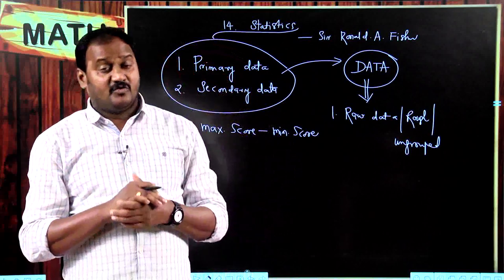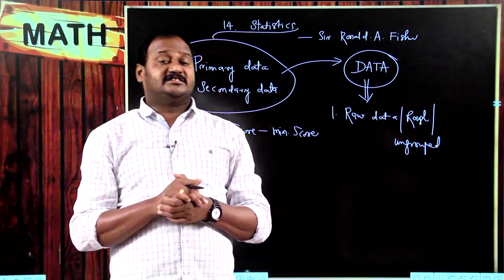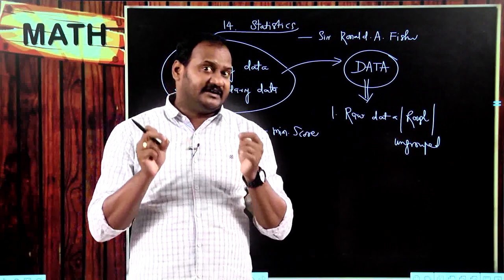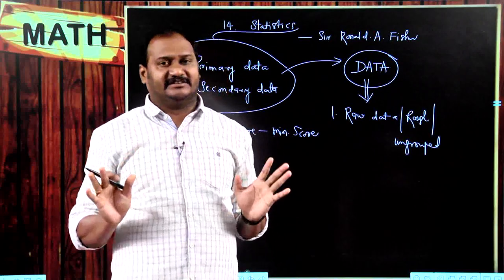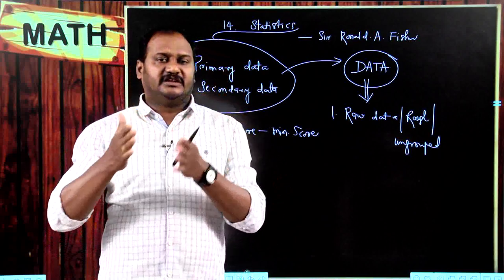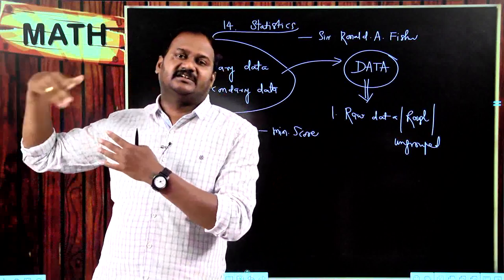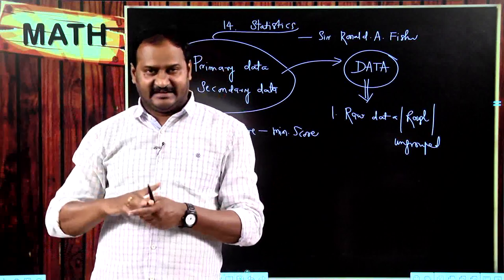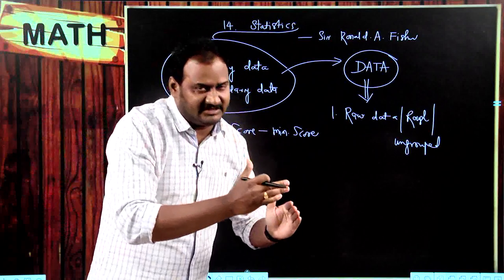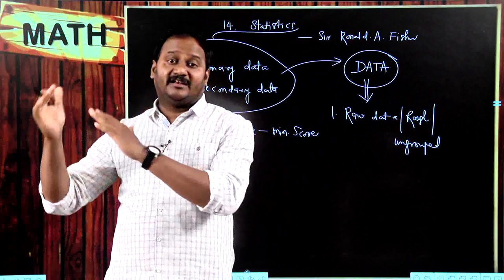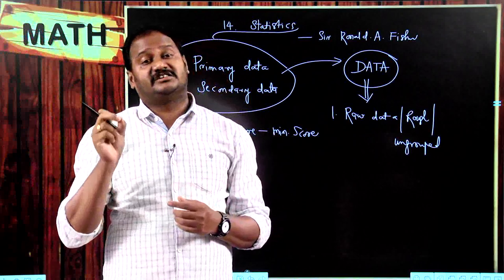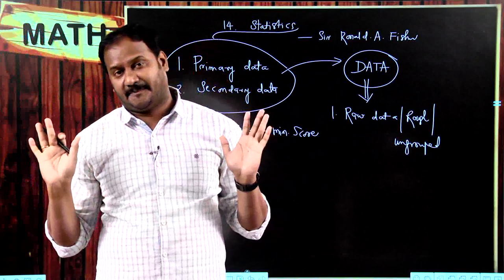Now, what is the range of the first n natural numbers? First n natural numbers start from 1, 2, 3, 4 and so on up to n. So n is the greatest number and 1 is the lowest. Therefore, n minus 1 is the range of the first n natural numbers.